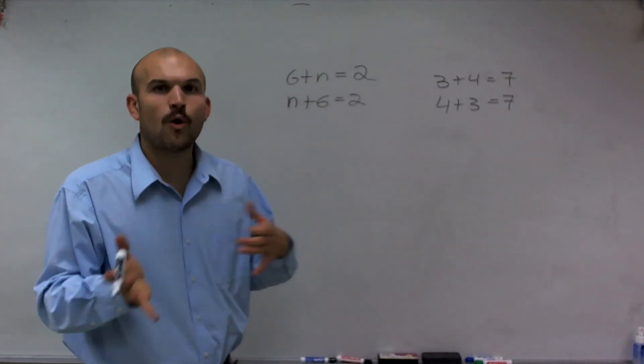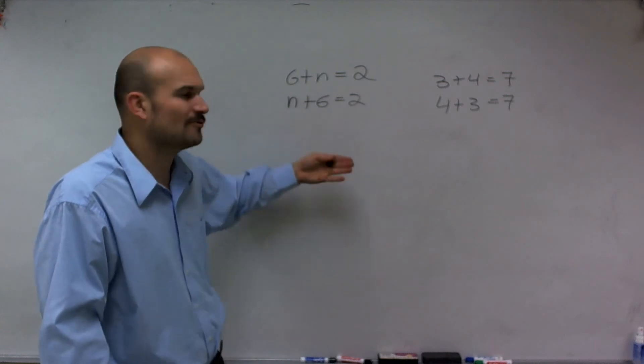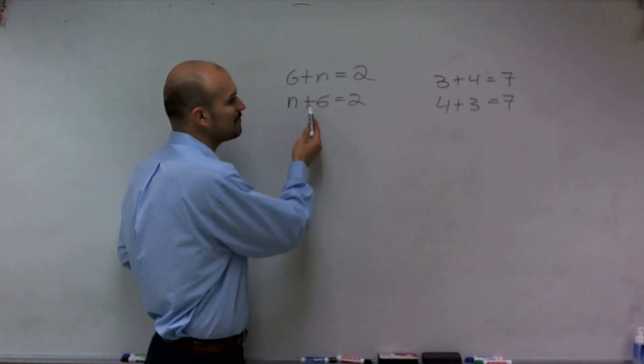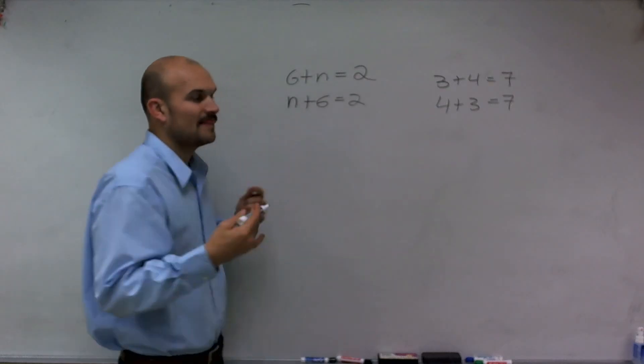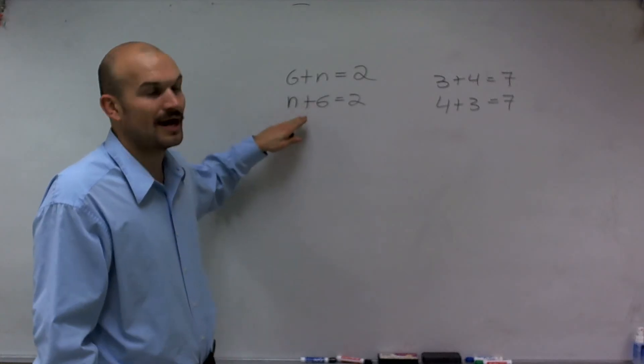So in addition, order does not matter. I can rewrite this expression so it might make a little more sense. Therefore, now as I read it, n plus 6 equals 2. It's now a little more obvious for us to understand that we're adding 6 to our n.